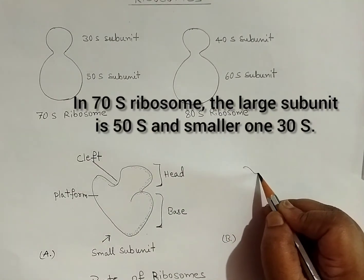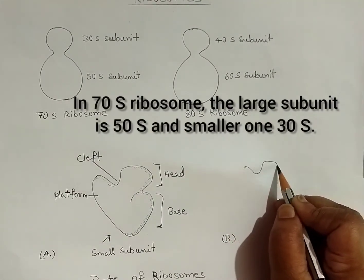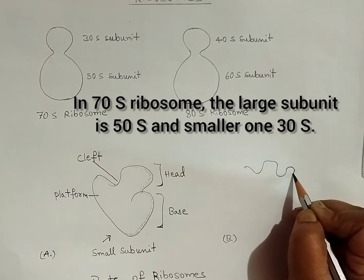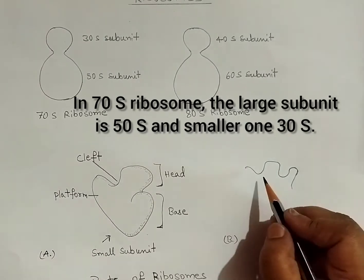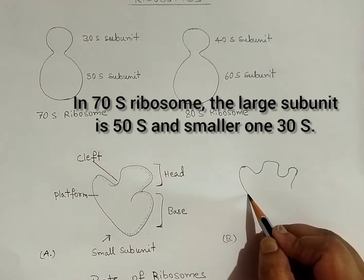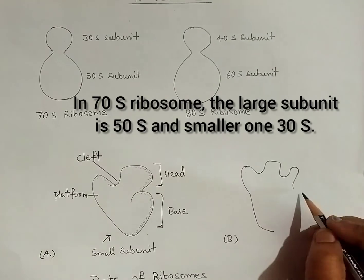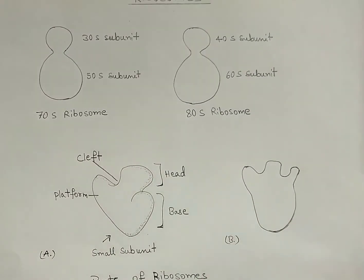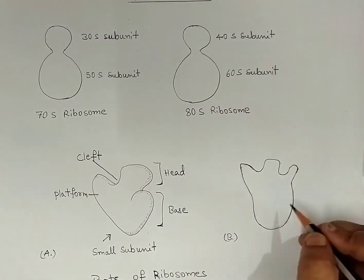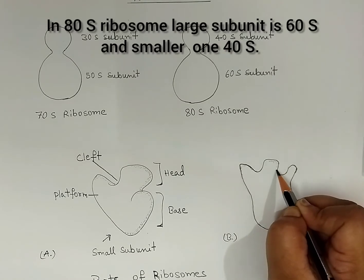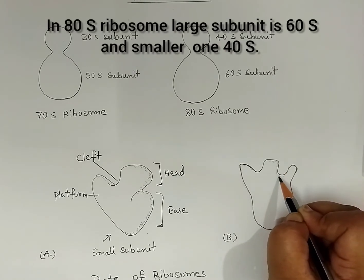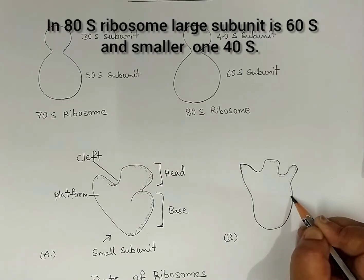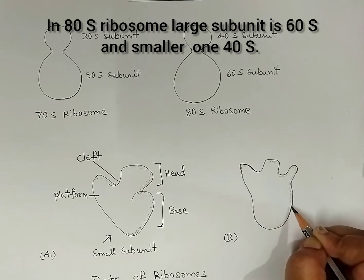In 70S ribosomes, the large subunit is 50S and the smaller one is 30S. In 80S ribosomes, the large subunit is 60S and the smaller one is 40S.